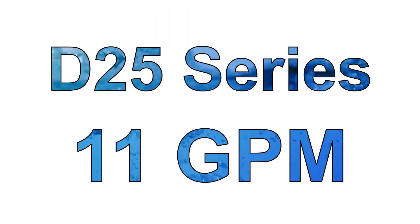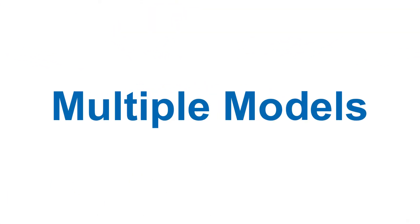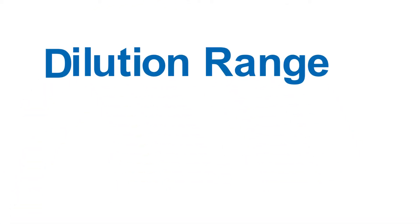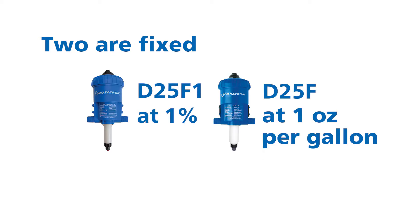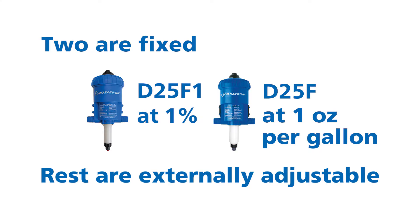The D25 series has a maximum water flow of 11 gallons per minute. Multiple models in this series provide a dilution range from 1 to 1500 to 1 to 10. Two of them are fixed, one at 1% and the other at 1 ounce per gallon, and the rest are externally adjustable.